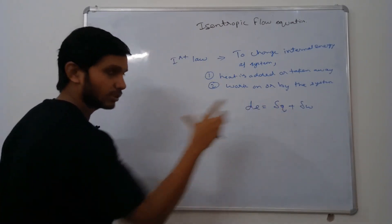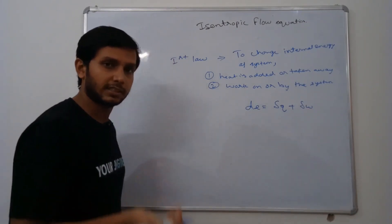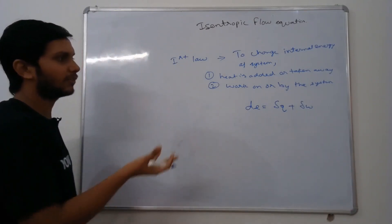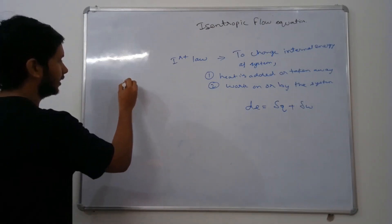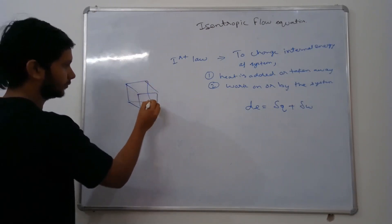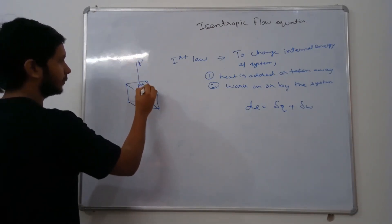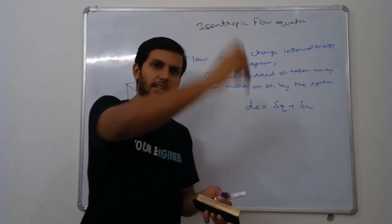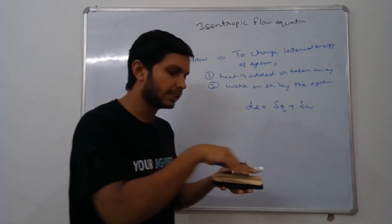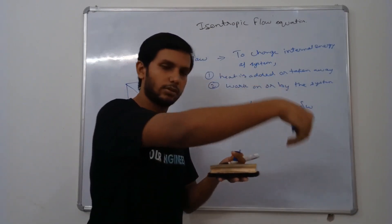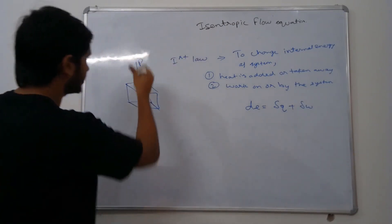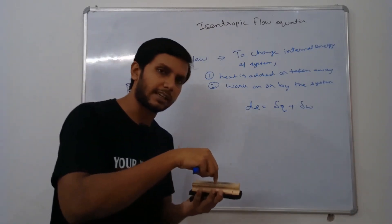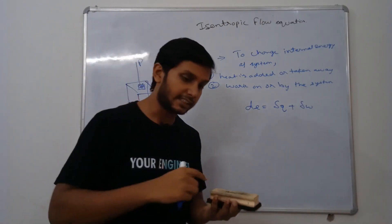Work is force times distance — force into displacement. If we take a small section, we apply a particular pressure over a particular area. There are shear forces, and pressure always acts normal to the surface. Suppose in a dA section we have a particular pressure point in Pascals — the same pressure acts everywhere.